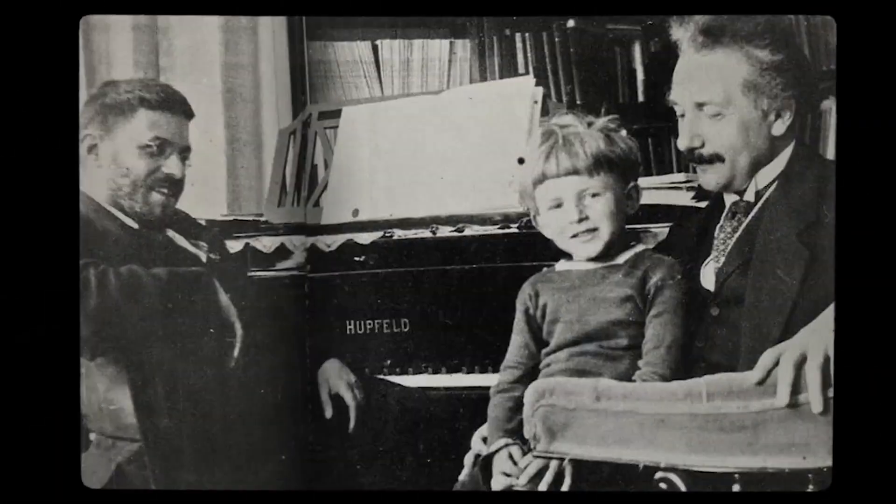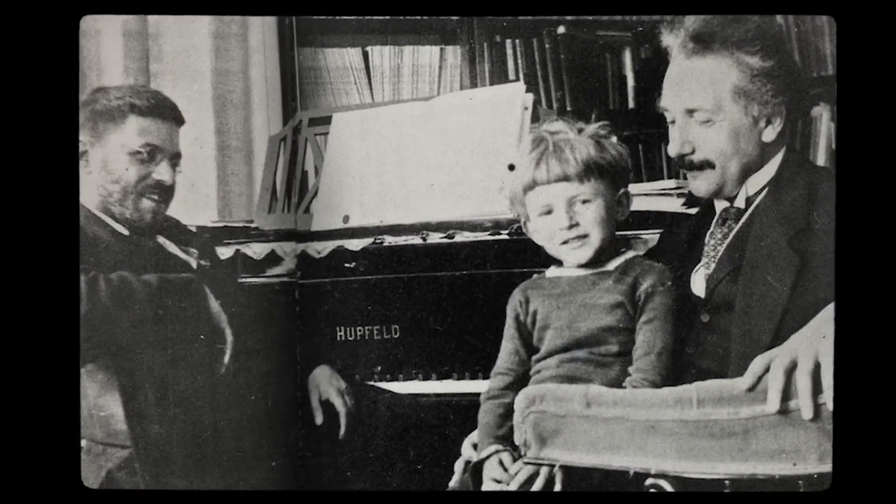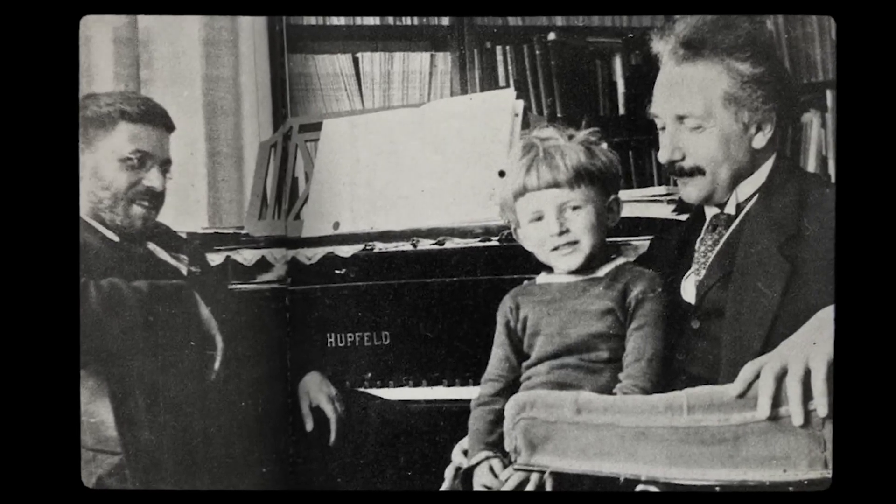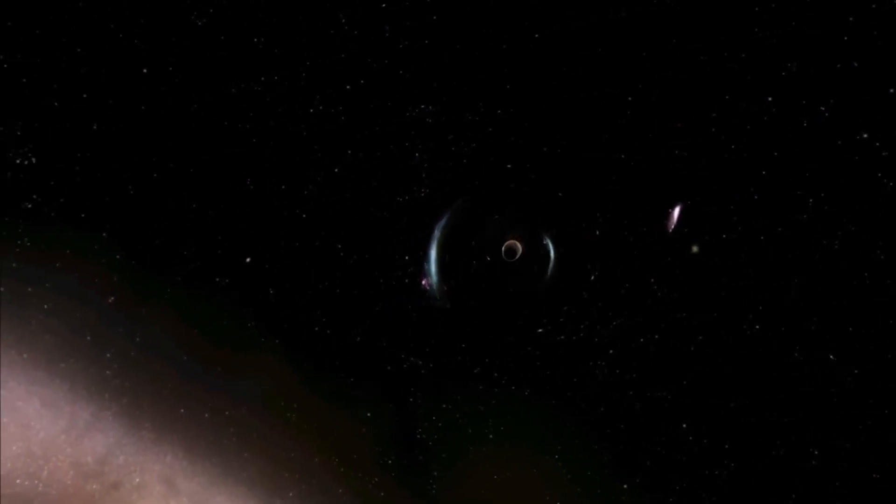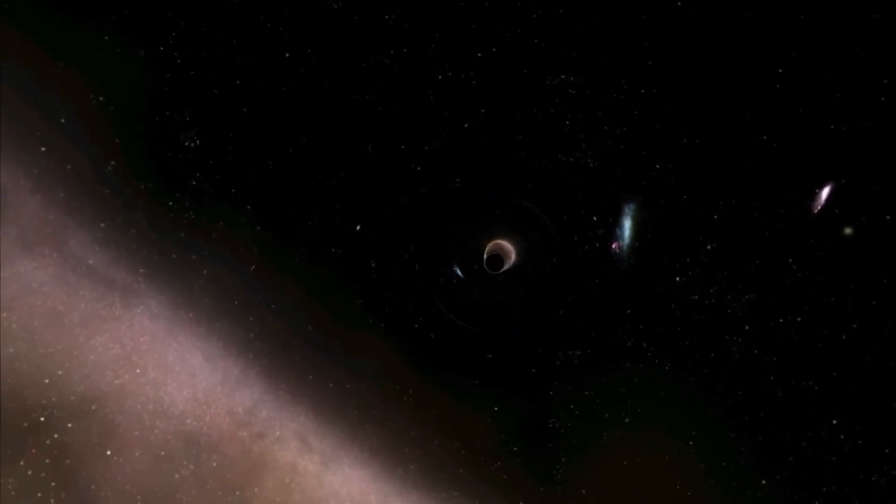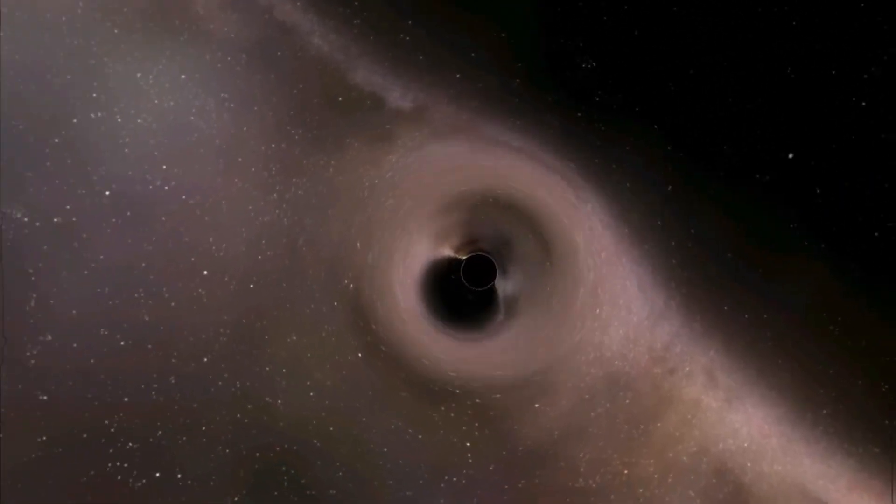This phenomenon, predicted by Einstein's theory of relativity, is due to the warping of spacetime caused by the intense mass of the black hole. The event horizon is not a solid physical surface like the crust of a celestial object, but represents a mathematical boundary, beyond which the structure of space and time behaves in a way that defies our intuition.